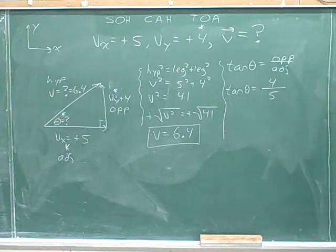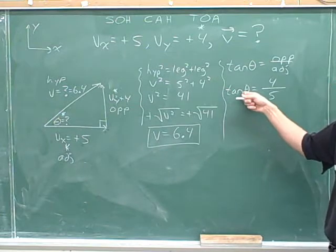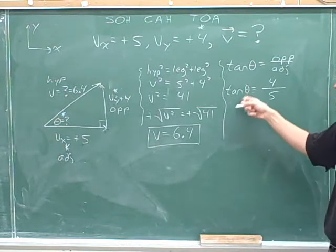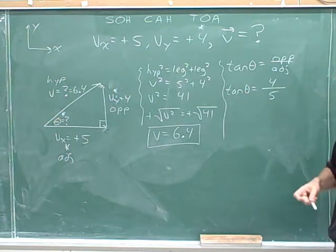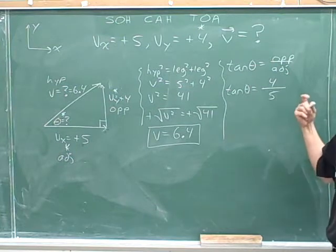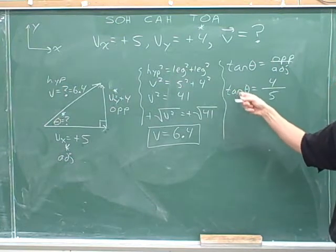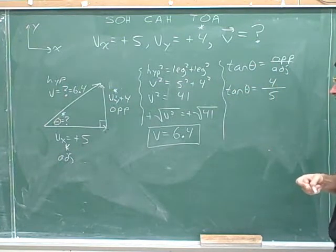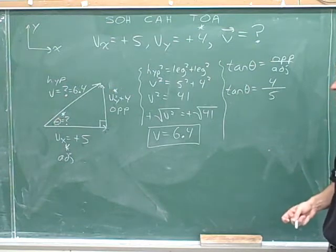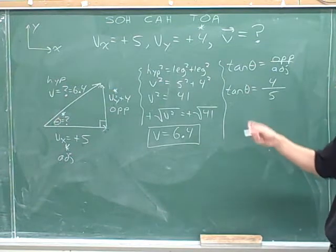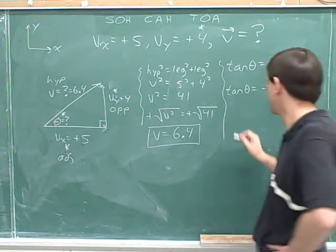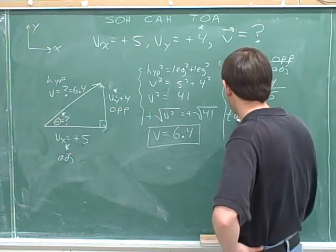All right, I'm going to postpone this calculation for a moment. We have to get the theta by itself. How do we get the theta by itself? By removing the tangent. And you do that by doing the opposite. Well, what's the opposite of a tangent? The opposite of a tangent is an inverse tangent. So we need to take the inverse tangent. And if we do it to the left-hand side, we have to take the inverse tangent of the right-hand side as well.